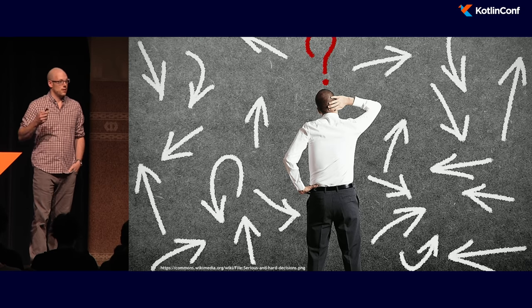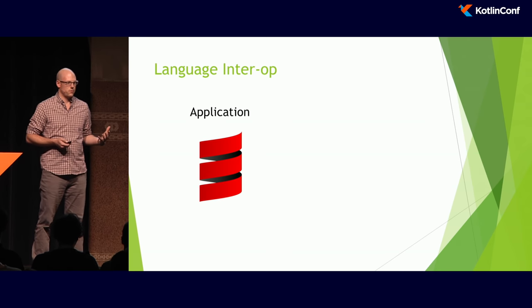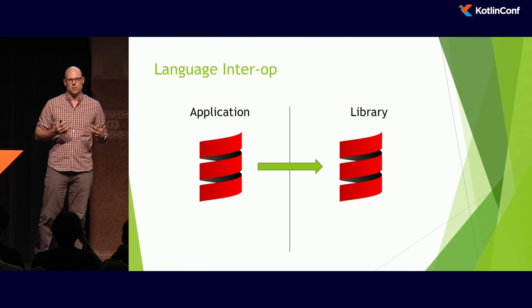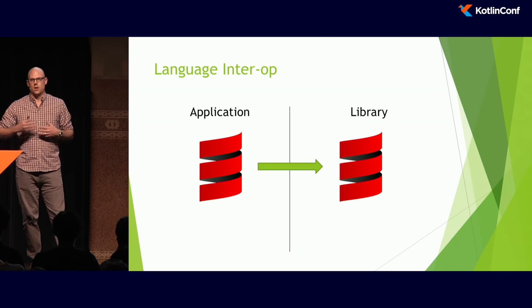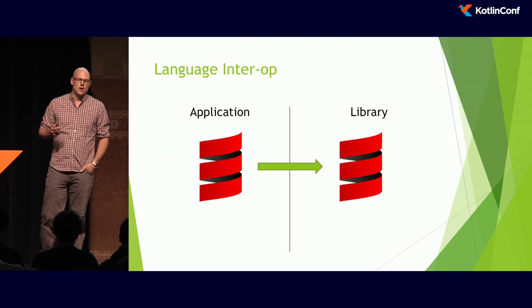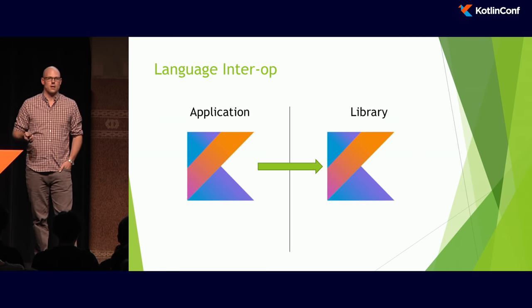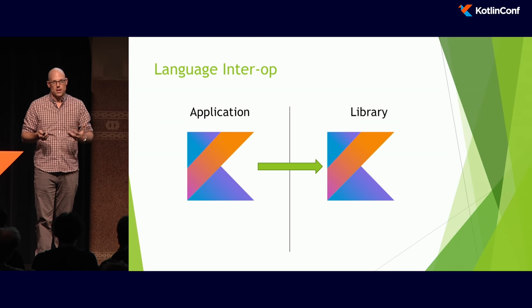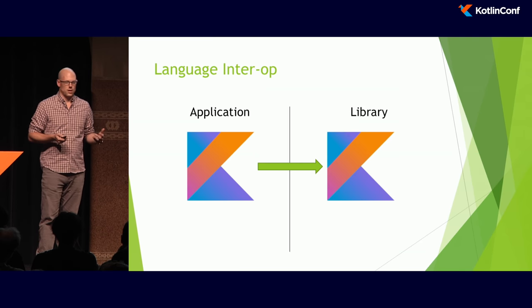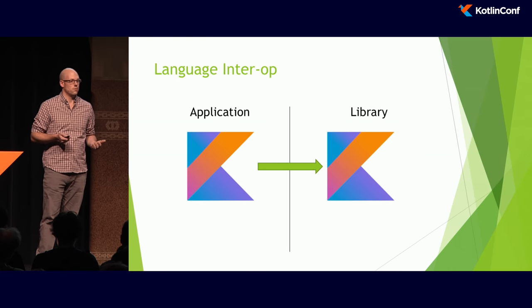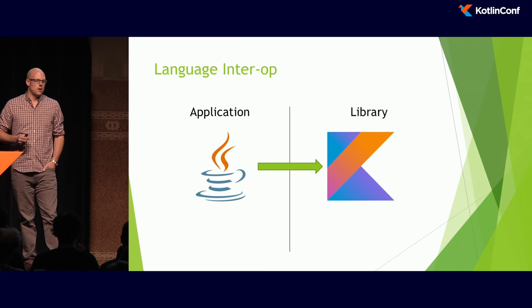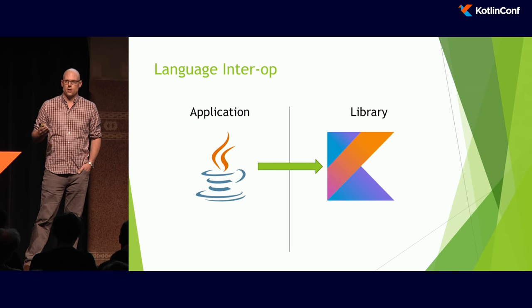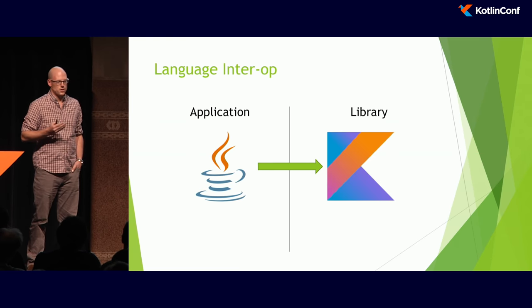As a library developer, we have a decision to make. We need to think about the customers we're targeting, and that's going to drive what language we decide to write our library in. If we're writing a library for Spark customers, for example, it makes sense to use Scala because the application is most likely written in Scala. Same story in Kotlin — if we're targeting Android applications or IntelliJ plugins, it makes sense to write our library in Kotlin so we get to take advantage of the standard library on both sides.